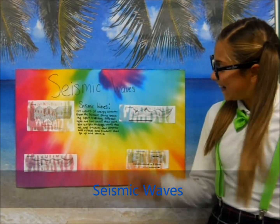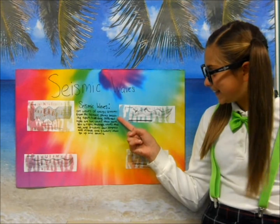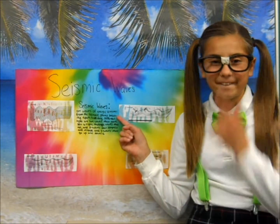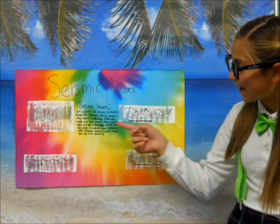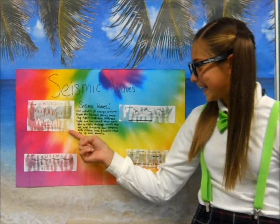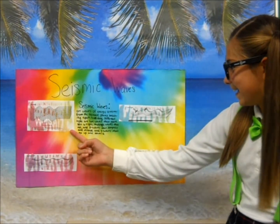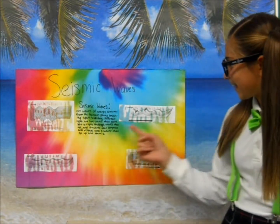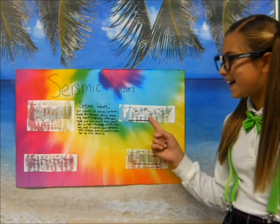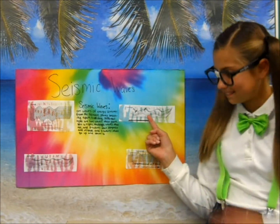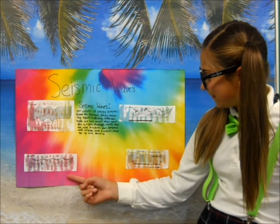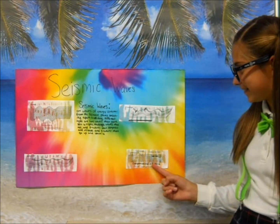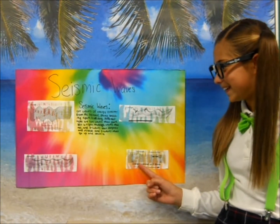Seismic waves are waves of energy created from the tectonic plates breaking or colliding. S waves, which are secondary waves, go up and down. Love waves go left to right. Rayleigh waves roll. And P waves, which are primary waves, compress and expand.